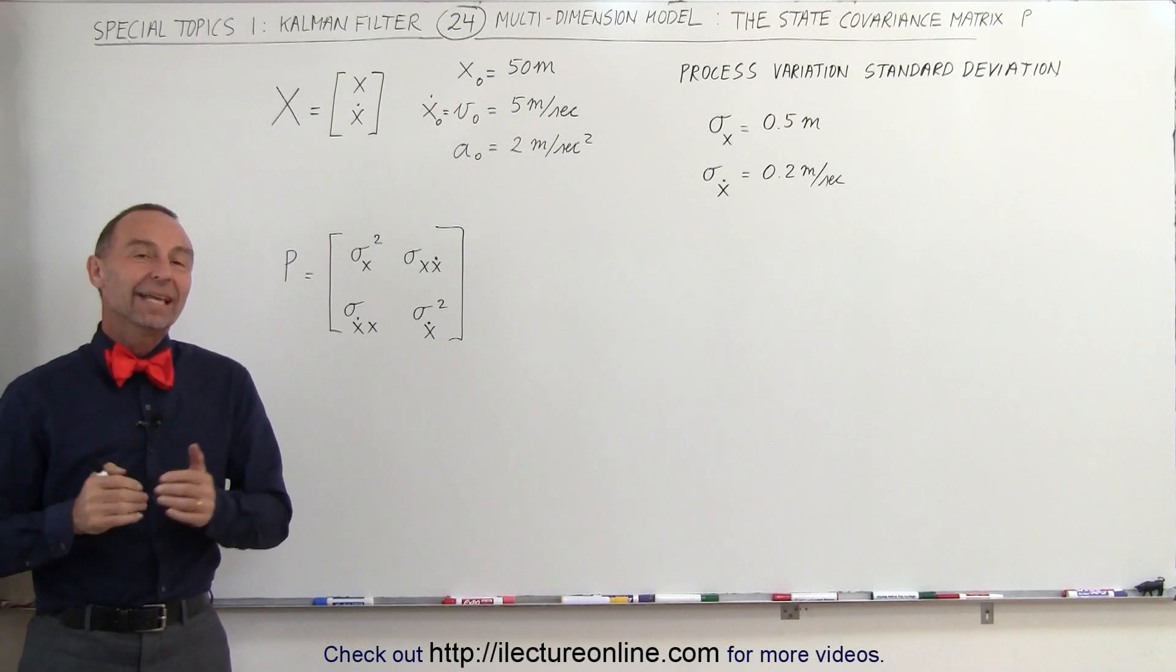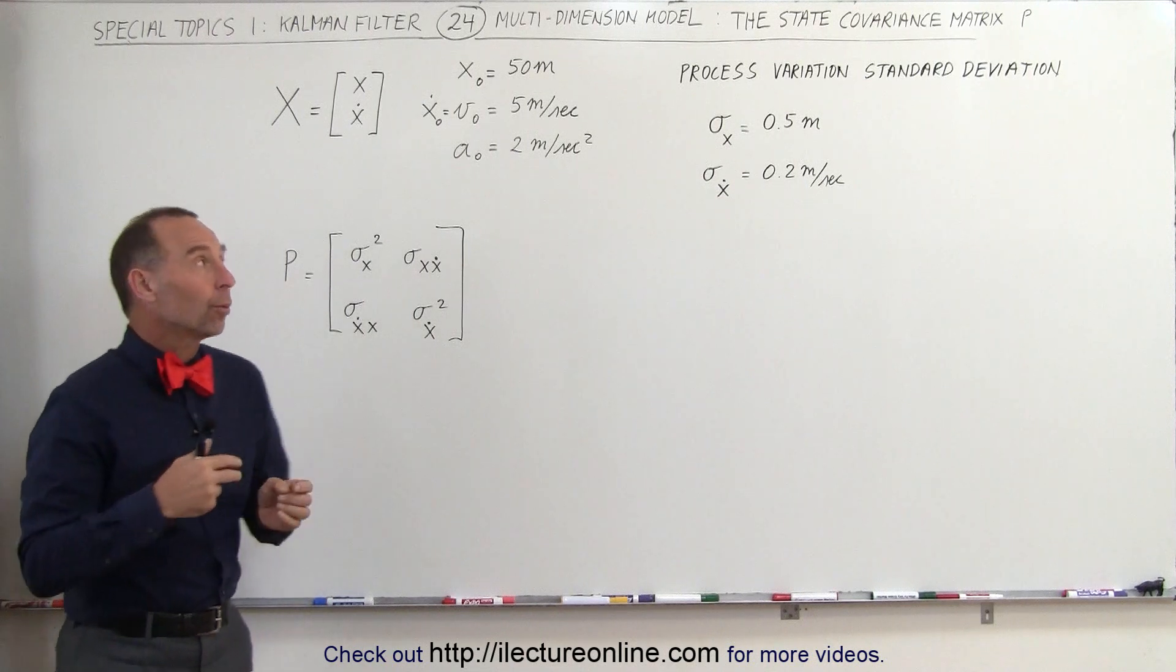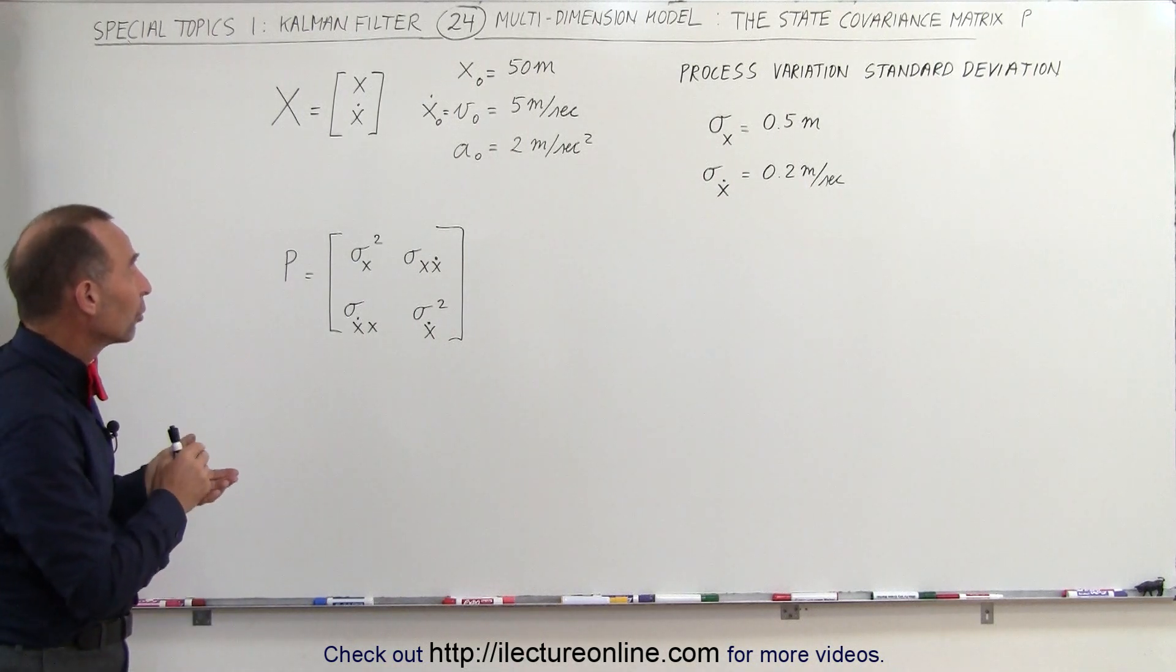Welcome to Electron Online. In this example we're going to show you what a very simplistic state covariance matrix will look like.